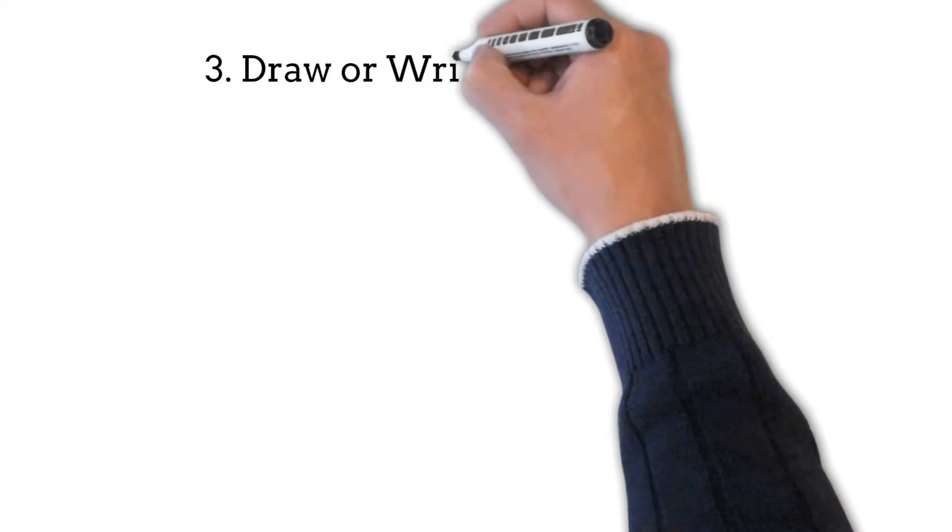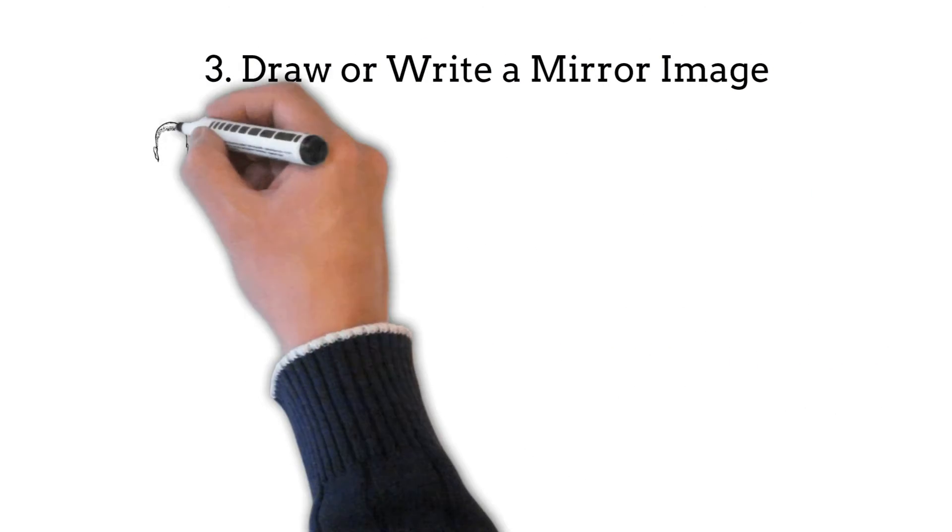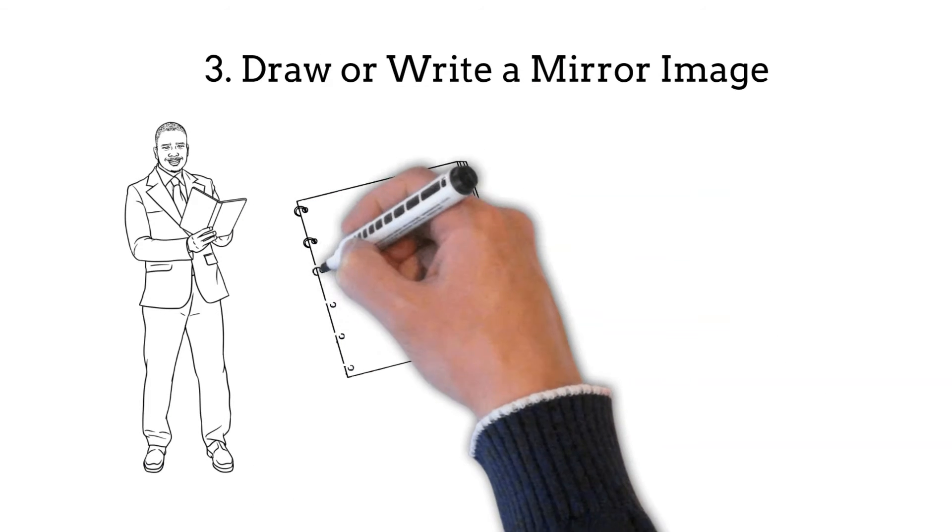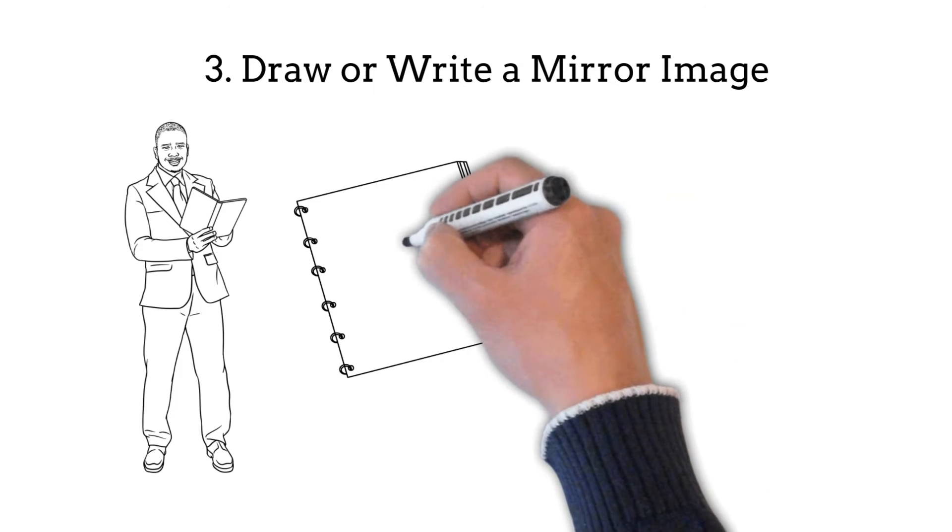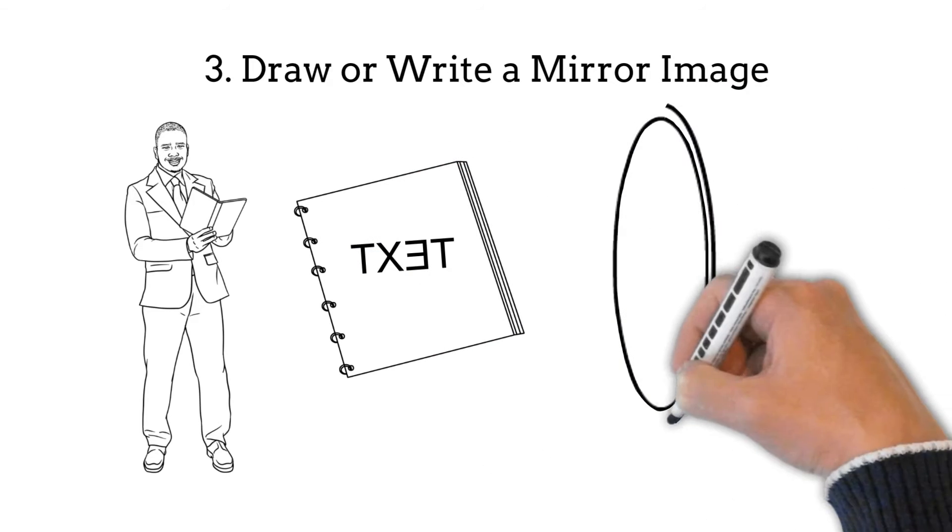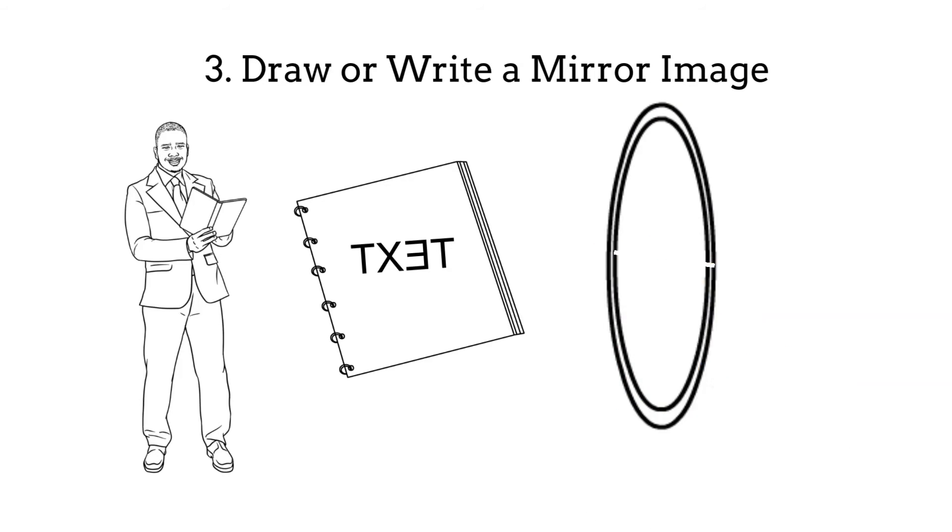3. Draw or write a mirror image. Select a word and write its mirror image. If you can write a whole sentence as a mirror image, you will have exercised your brain very nicely. You should be able to use a mirror to read correctly what you wrote. This is a fun exercise as well. You can even play this as a game with your friends and family.